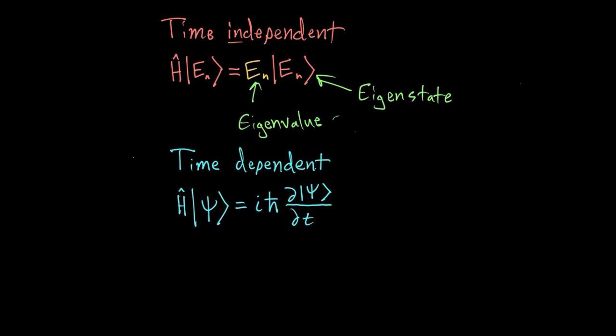So when you use the time-dependent Schrödinger equation, what you're trying to do is say, given a state, how does it change with time? And you can use the Hamiltonian and this equation to figure that out. This is how the state changes with time. It's the time derivative of the state.